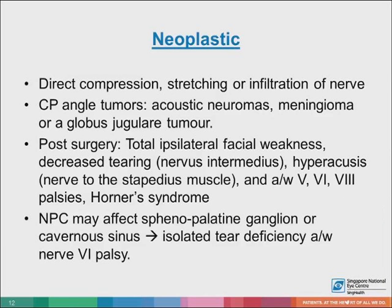Neoplastic causes of seventh nerve palsy: the tumor affects the seventh nerve by direct compression, stretching, or direct infiltration. Other causes include CP angle tumor surgery itself, which can lead to iatrogenic involvement of the contiguous fifth, sixth, and eighth nerves, and Horner syndrome, with decreased hearing and hyperacusis. In our population, NPC affecting the sphenopalatine ganglion or cavernous sinus can result in isolated tear deficiency and facial nerve palsy.